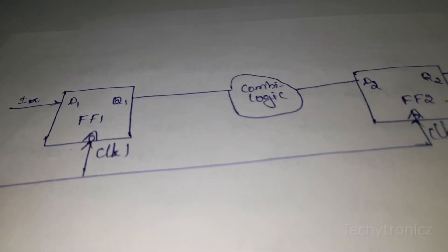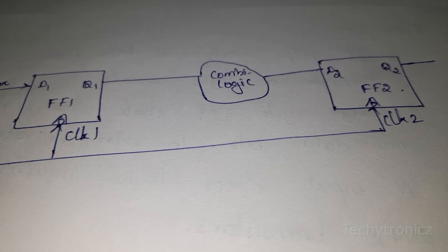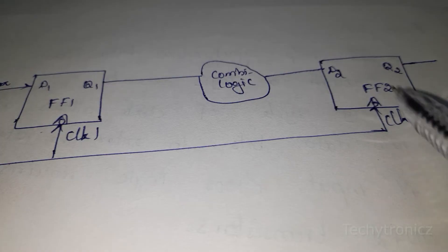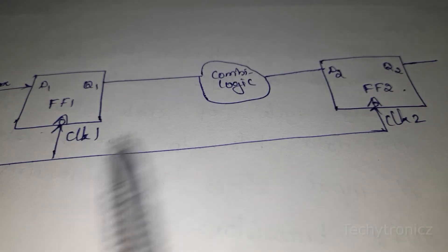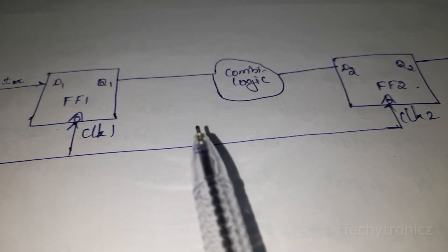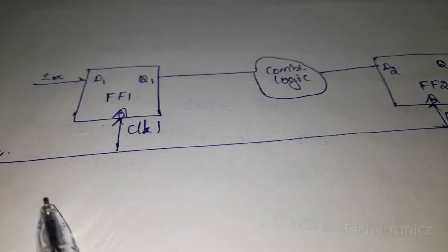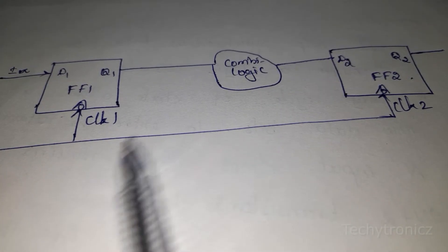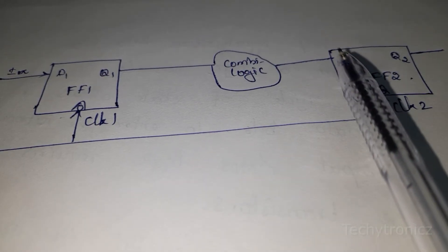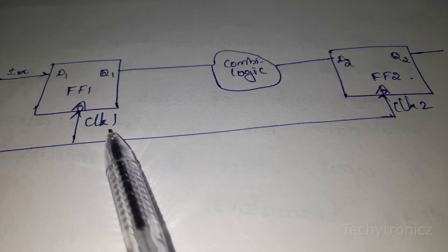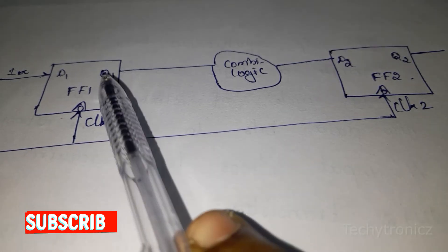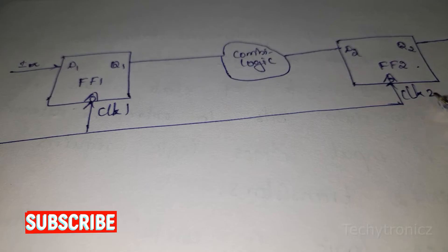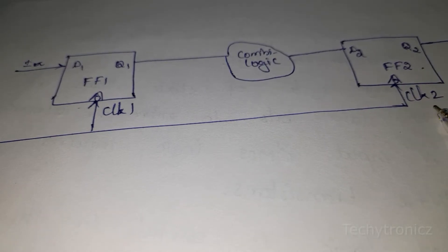For that, we are taking one sequential circuit. In a sequential circuit, we have combinational logic and flip-flops. Two flip-flops, F1 and F2, are connected to a common clock. Now flip-flop 1 is receiving clock 1 from the main clock, and flip-flop 2 is receiving clock 2 from the main clock.